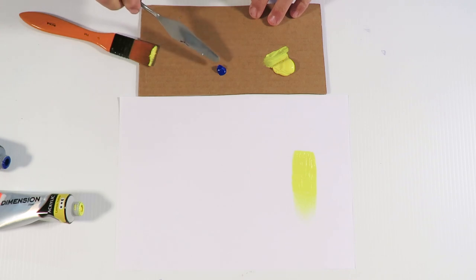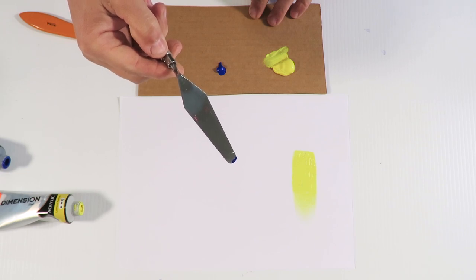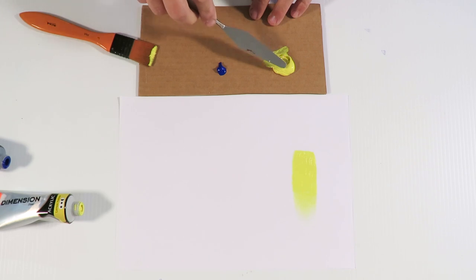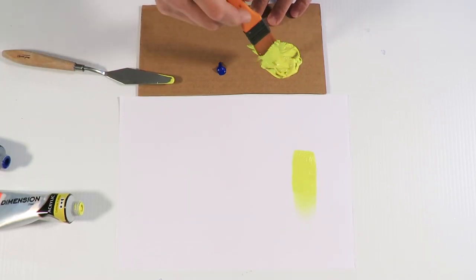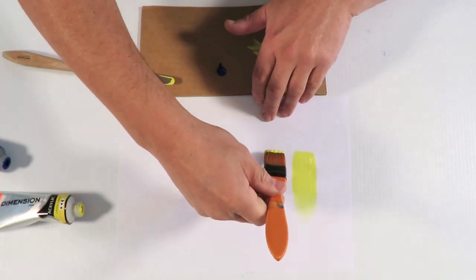Right now I'm going to start adding blue paint to the yellow. We just start off with a small amount of blue paint, a really tiny amount on the palette knife and mix it up with the yellow paint. Paint this on the paper so you can see what it looks like.